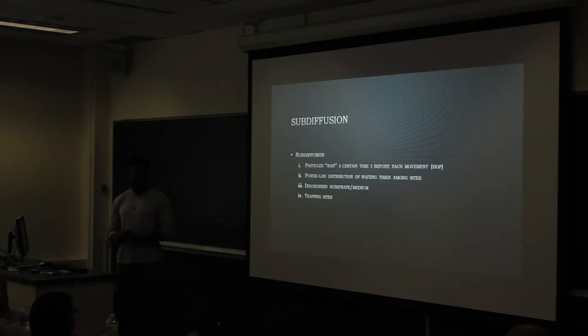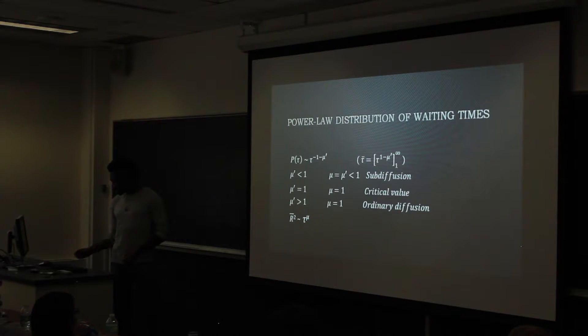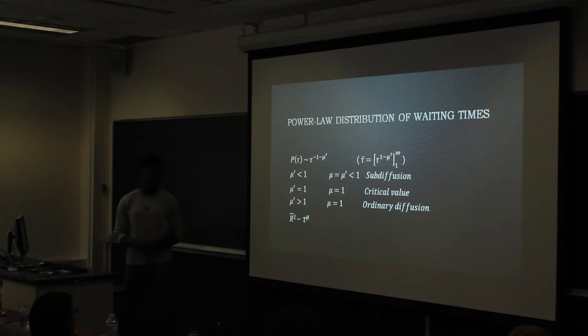And sub-diffusion is defined as when a particle has to diffuse through a disordered medium, or a medium that includes sites that make it wait, just trapping sites. And the waiting times that these monomers have to wait are defined by a power law distribution. And the distribution goes as tau to the minus 1 minus mu prime. And as you can see, as mu prime is less than 1 is defined as sub-diffusion.